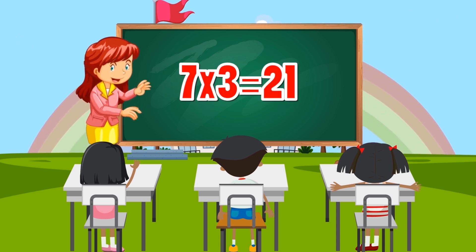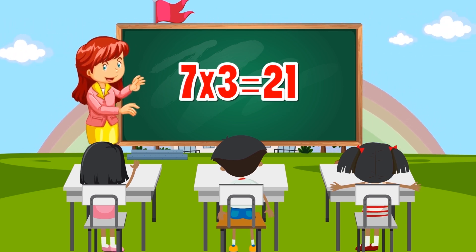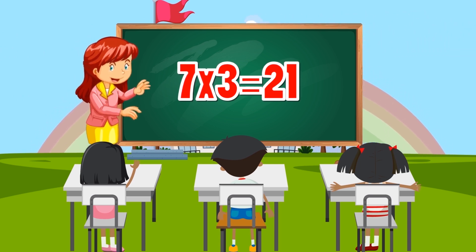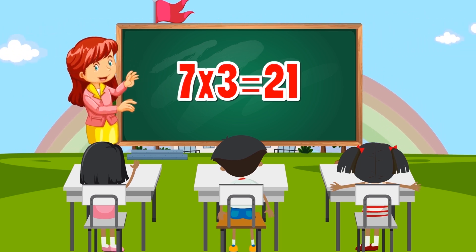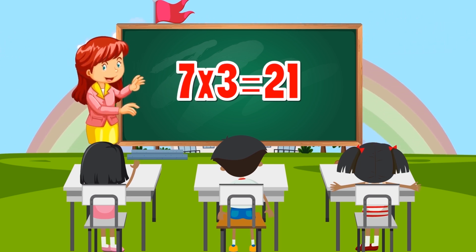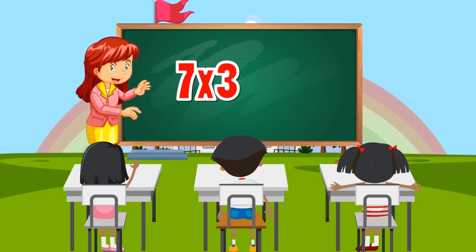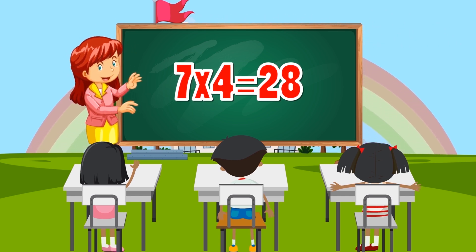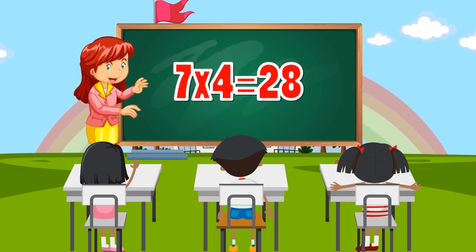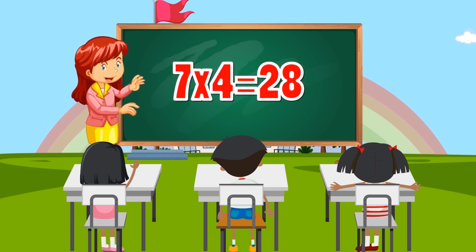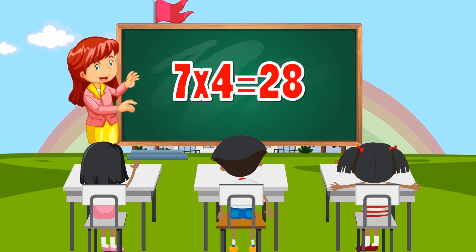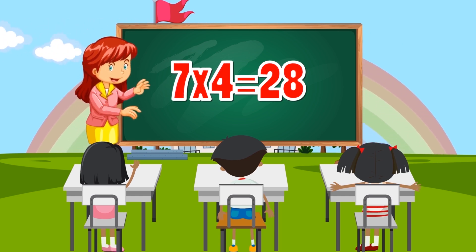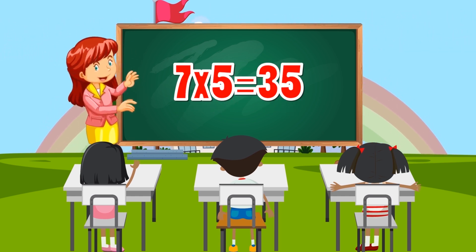7 times 3 equals 21. 7 times 4 equals 28.